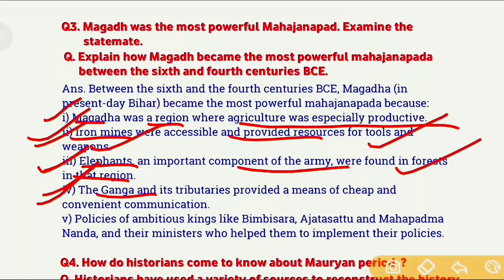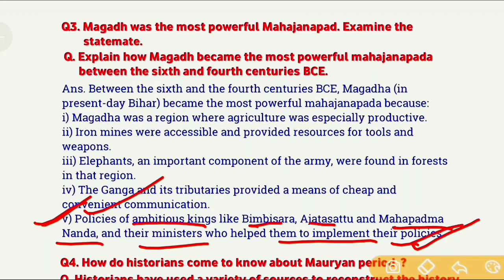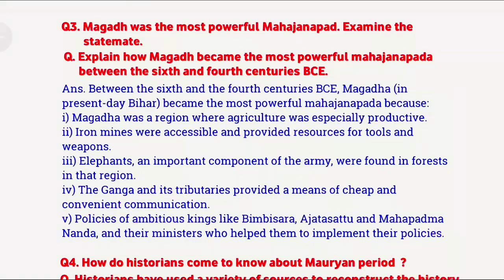The fourth reason is that river Ganga and all its tributaries flowed through Magadha, providing very cheap and easy communication. The fifth and last reason is the ambitious kings who ruled Magadha — different dynasties' rulers like Bimbisara, Ajatashatru, and Mahapadmananda, whose policies and ministers helped implement those policies. These are all the important reasons why Magadha grew so much and became a very powerful Mahajanapada.